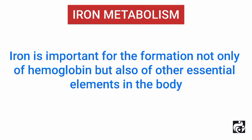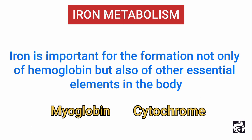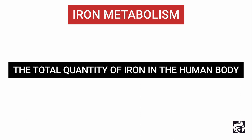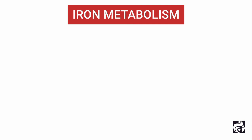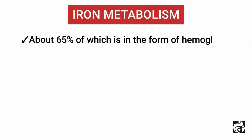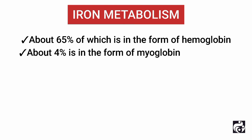Now let's talk about iron metabolism, as iron is important for the formation not only of hemoglobin but also of other essential elements in the body, such as myoglobin, cytochromes, etc. The total quantity of iron in the human body averages about four to five grams, about 65 percent of which is in the form of hemoglobin, and about four percent is in the form of myoglobin.